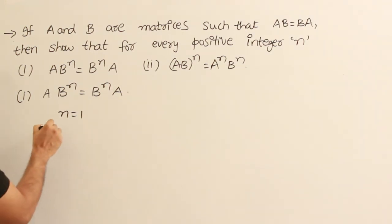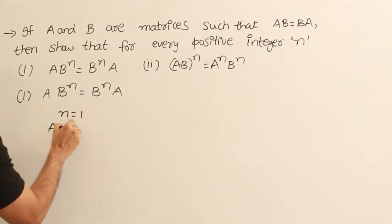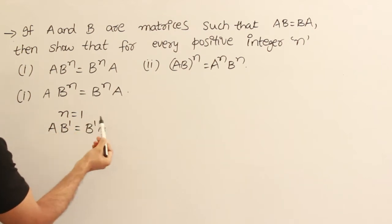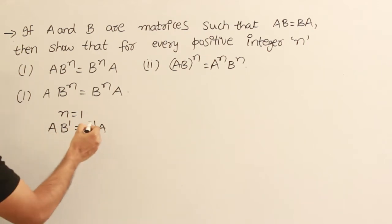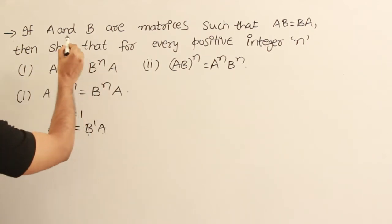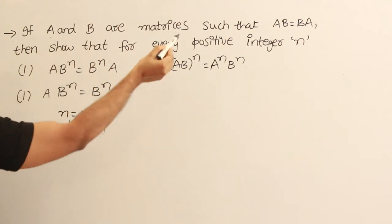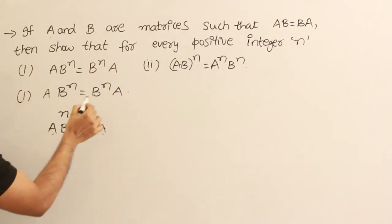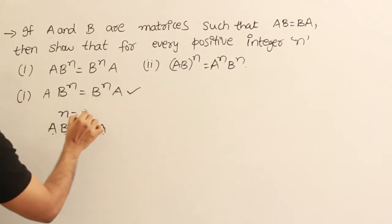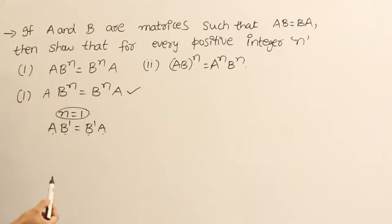For n equal to 1, we get A into B power 1 equal to B into A power 1, which is nothing but AB equal to BA. It is already given that AB equals BA. Therefore this equation is true for n equal to 1.